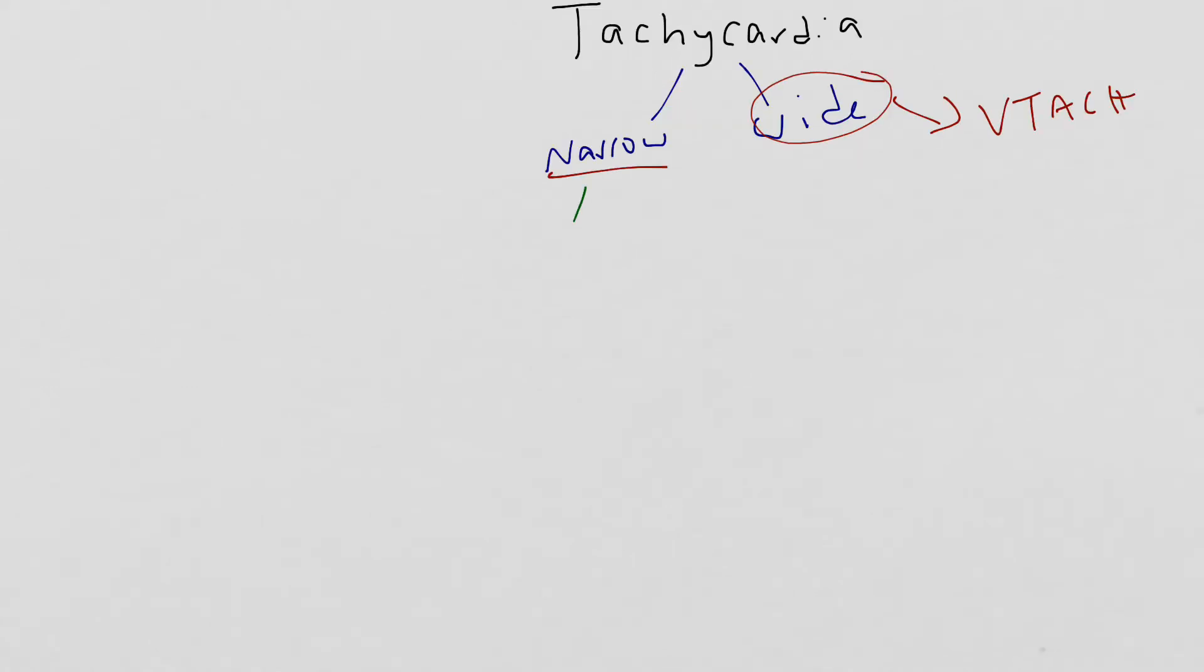The next branch point in narrow complex tachycardias is, is the tachycardia stable or is it unstable? Understanding that stable narrow complex tachycardias get medicine whereas unstable narrow complex tachycardias get Edison or electricity. But before we go down that branch point, let's first talk about what makes patients unstable.